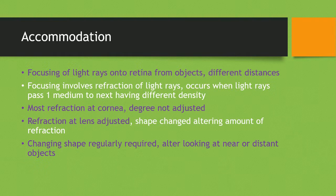Accommodation is the focusing of light rays onto the retina from objects at different distances. Focusing involves refraction of light rays, which occurs when light passes from one medium to another of different density. Most refraction takes place at the cornea, but the degree here cannot be adjusted. Instead, refraction is adjusted at the lens by changing its shape, which alters the amount of refraction. Changing the lens shape is required when looking at near or distant objects — it's all about the lens.